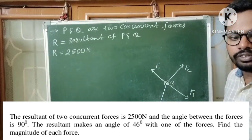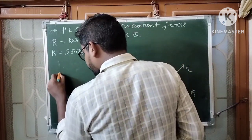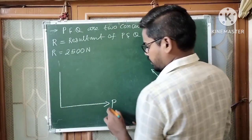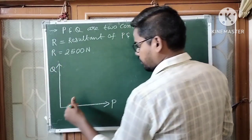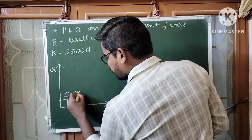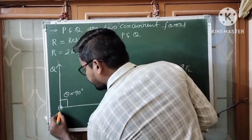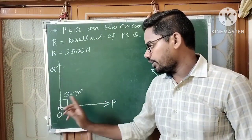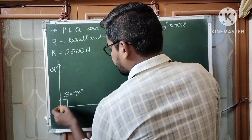Let us draw the diagram. The angle between forces P and Q is 90 degrees, so let angle theta equal 90 degrees. These two are concurrent forces because P and Q meet at point O.